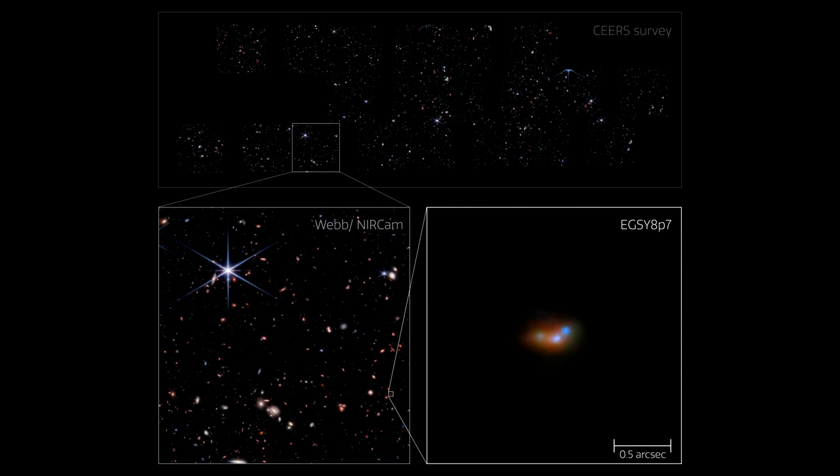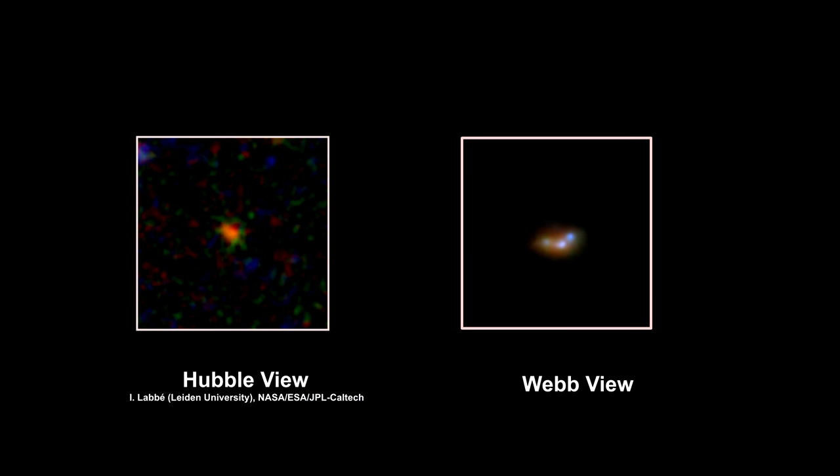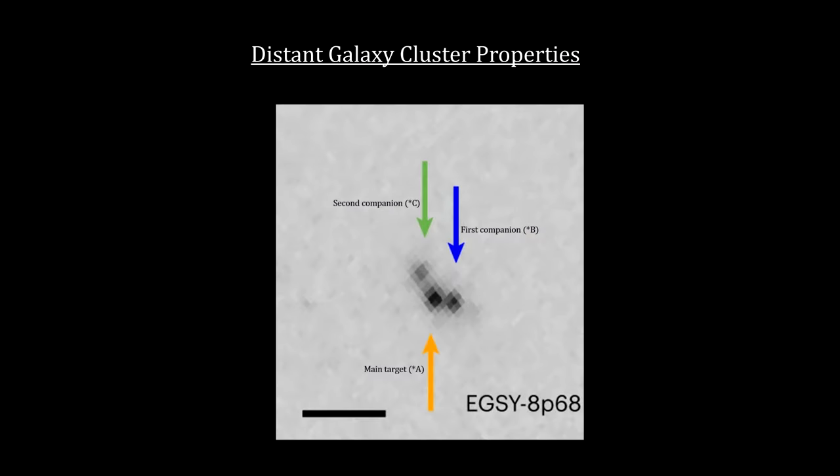Note that the image shows three interacting galaxies. Here's the view from Webb and Hubble. Where Hubble was seeing only one galaxy, Webb sees a cluster of smaller interacting galaxies. Webb's NIRCam instruments were able to resolve smaller, fainter galaxies that surround the bright galaxy.